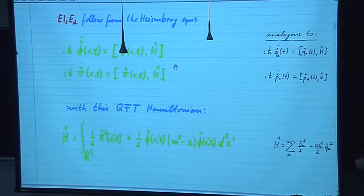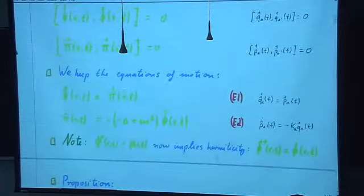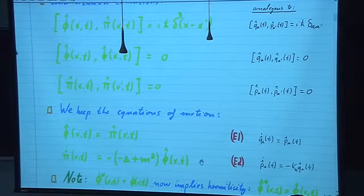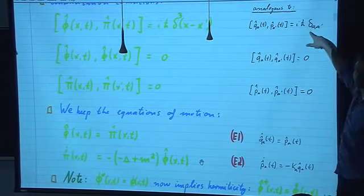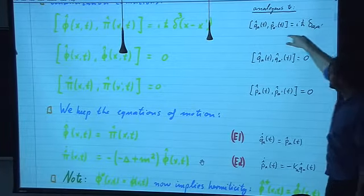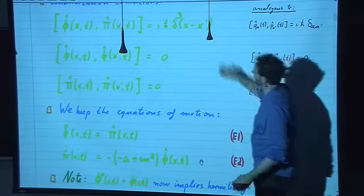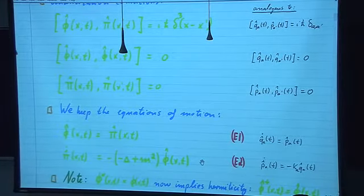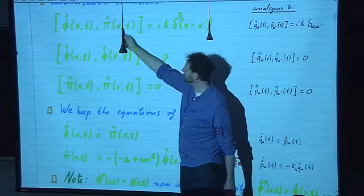The other issue is that in first quantization this is a sum, and here it is an integral. We'll have to deal with that as well. It also relates to the difference that in first quantization commutation relations have a Kronecker delta, while in second quantization we have a Dirac delta — which you can't evaluate at x equal x prime.